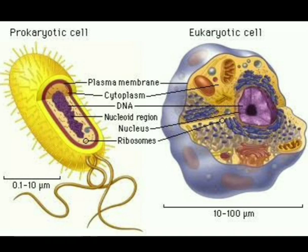Now we will discuss their differences. First, prokaryotic cell — if we split the word prokaryotic, it can be split into two parts: one is 'pro' and another is 'karyotic'. The word 'pro' means before, and 'karyotic' means kernel, which means nucleus.